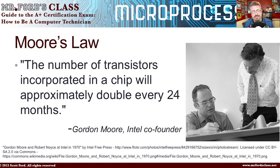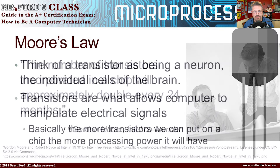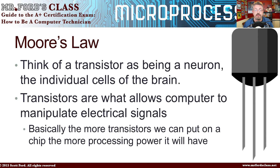The final concept I want to introduce before we leave this video is something called Moore's Law. Gordon Moore is one of the co-founders of Intel — the biggest and most influential CPU manufacturer ever. His law states that the number of transistors incorporated in a chip will approximately double every 24 months. If you look at the history of CPUs, the amount of improvement is just staggering — we're not talking little increases, we're talking major evolutionary leaps. A transistor is like a neuron in the body — it's that single nerve cell. The transistor is what actually allows the computer to manipulate electrical signals. Basically, the more transistors we can put on a chip, the more processing power it has.